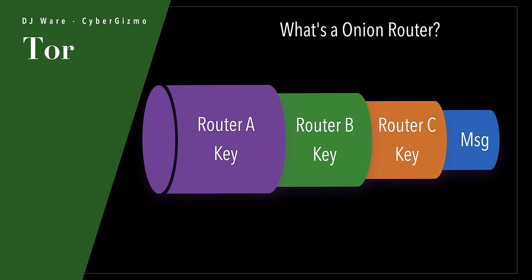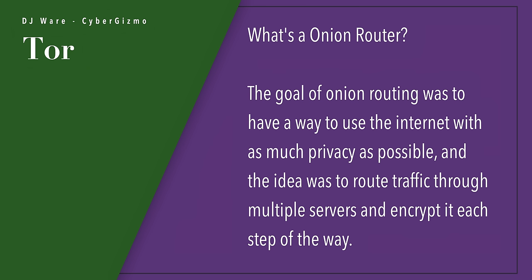I've talked about this before — if you're interested in more in-depth information on how Tor works, you can go to my other video I did on Tor. What is an Onion Router? This is the way the NRL described it: the goal of Onion Routing was to have a way to use the Internet with as much privacy as possible, and the idea was to route traffic through multiple servers and encrypt it at each step of the way.